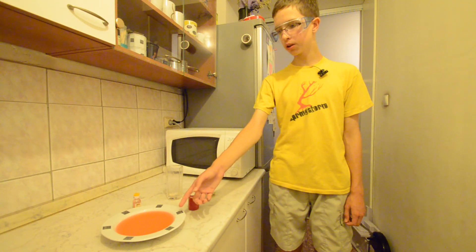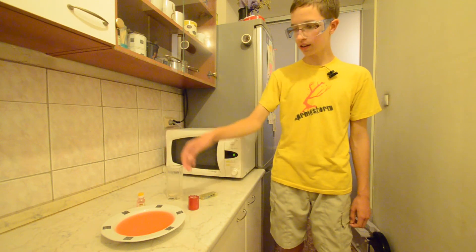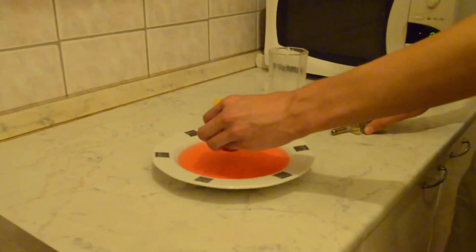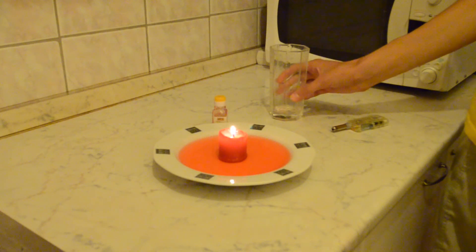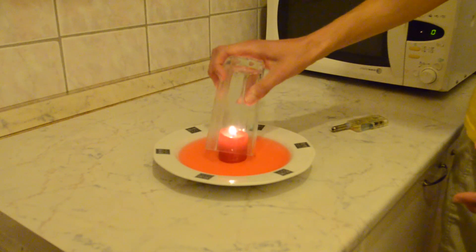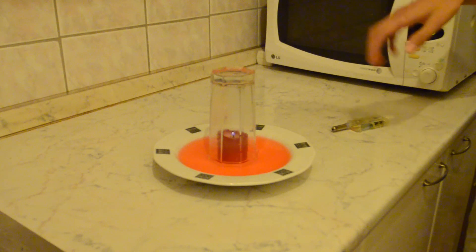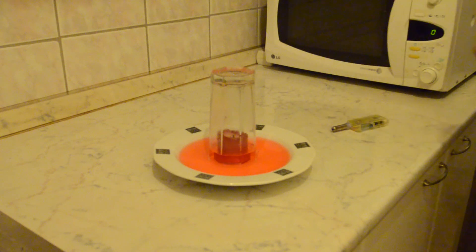For this experiment you need a plate with colored water - we colored water with food color - a glass, and a candle. Fire the candle, put it in the middle of the plate and put the glass on it. We get a little vacuum which sucks some water from the plate into the glass.